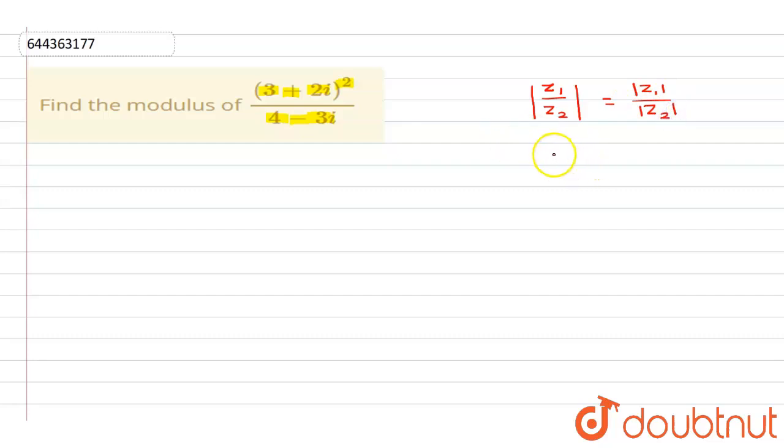Similarly, we have mod of z1 squared is equal to mod of z1 whole squared. This is the second case.